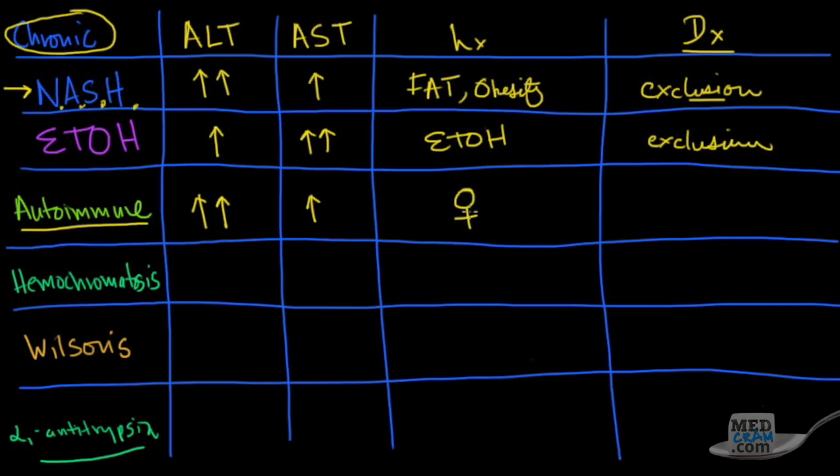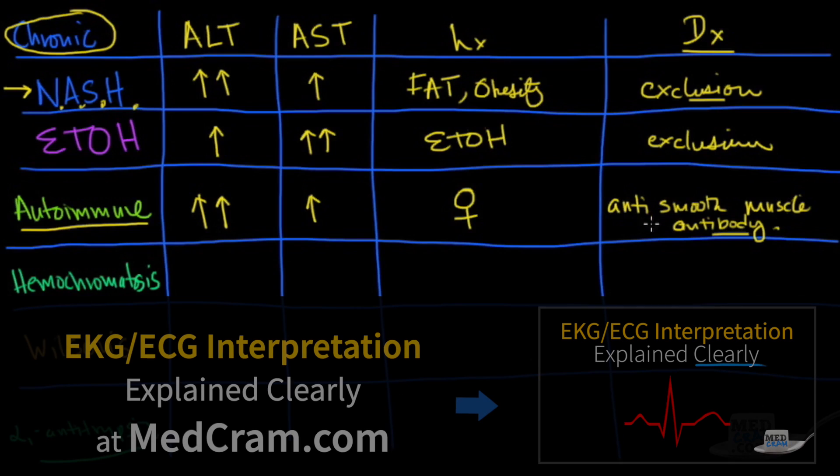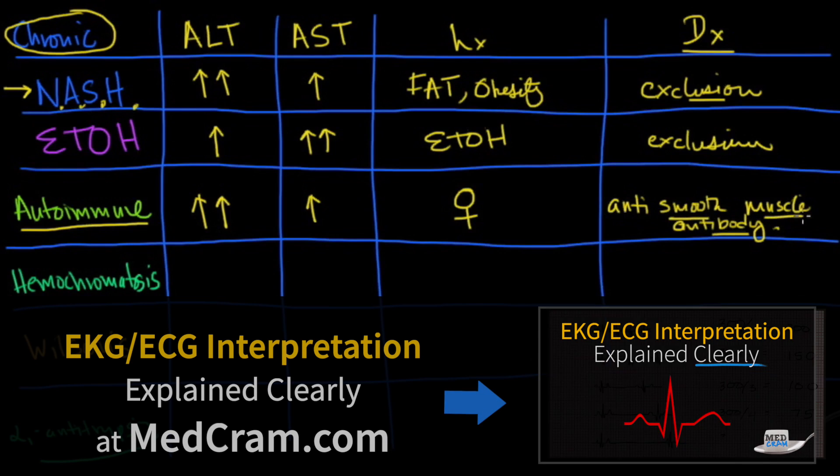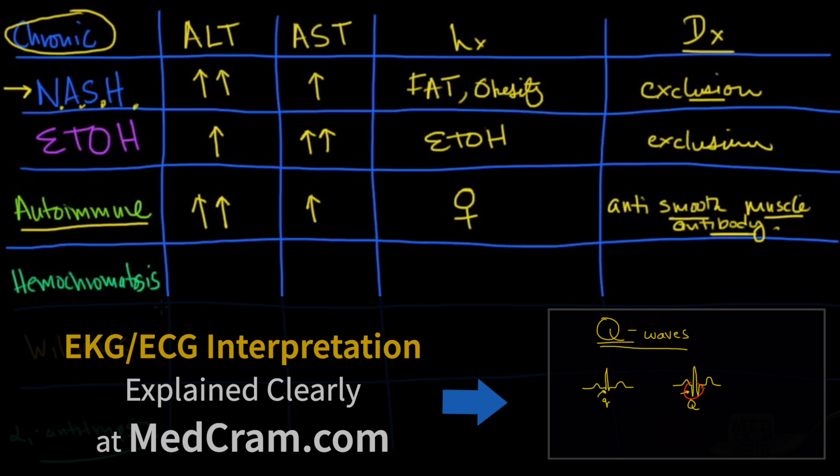And the thing here that you've got to know is this. This is for boards, and it's the anti-smooth muscle antibody. If that's positive, it's going to be very difficult to say that this is all related to alcohol disease. So look for positive autoantibodies, anti-nuclear antibodies. But specifically, the answer they're looking for is anti-smooth muscle antibodies.